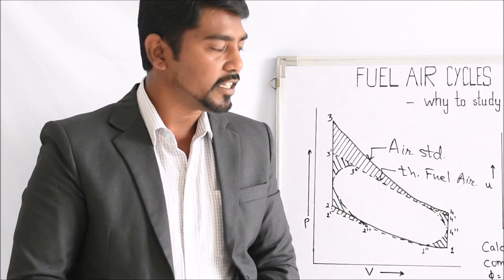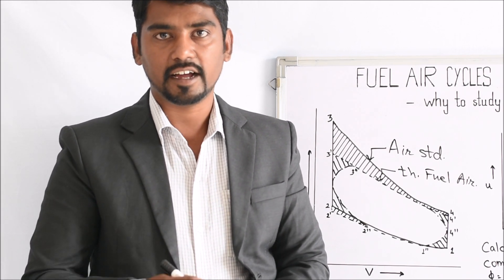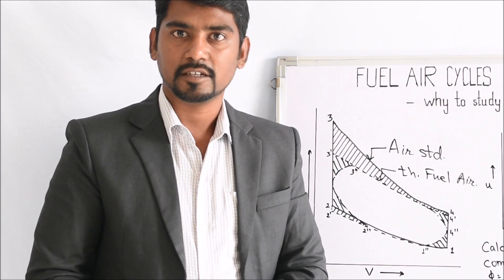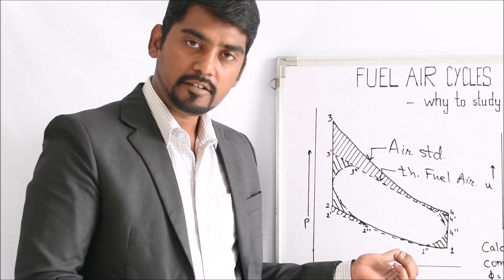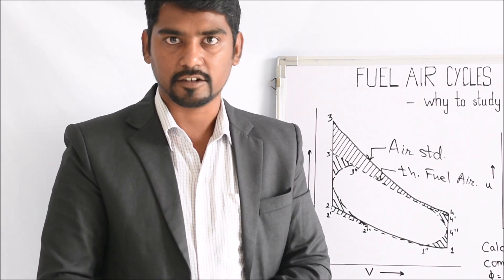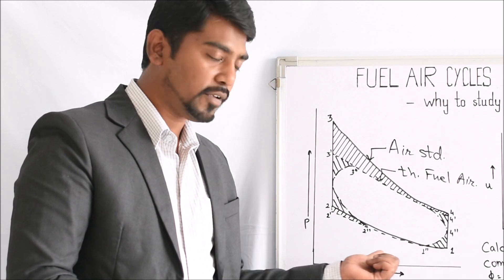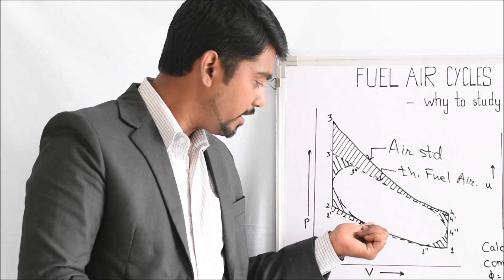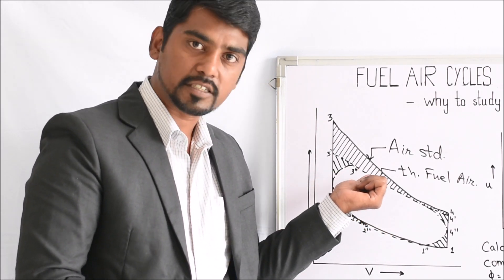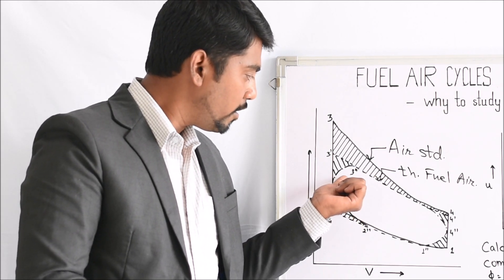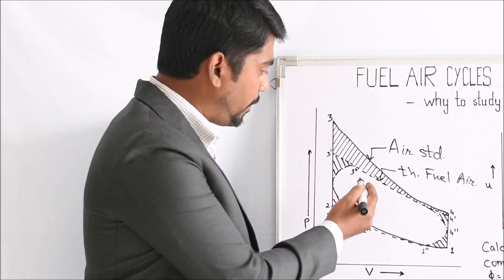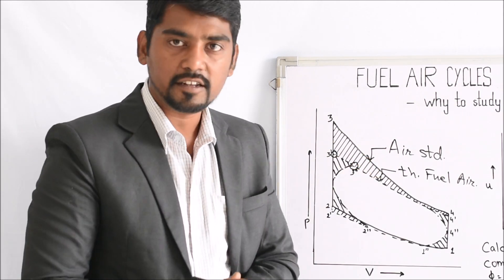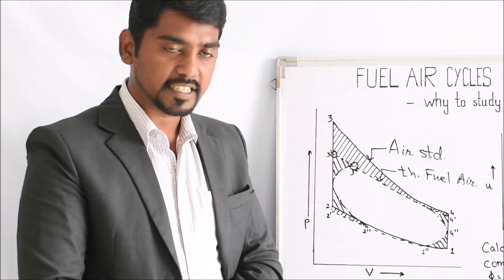The next cycle that comes into picture is the actual fuel air cycle, where some assumptions are neglected — such as instantaneous combustion. The spark plug has to be fired when the piston is about to reach top dead center before it has completed the swept volume. So somewhere around point 2-double-dash the spark plug is initiated and pressure goes on increasing along with the movement of the piston. This causes a change in volume while the pressure is rising, and the pressure rise is not as much as in the theoretical fuel air cycle because of progressive combustion.